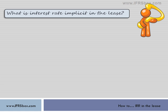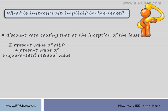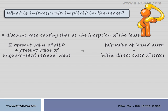First of all, what is interest rate implicit in the lease? There are a few definitions. For example, IAS 17 defines it as a discount rate that at the inception of the lease causes the aggregate present value of minimum lease payments and unguaranteed residual value to be equal to the fair value of the lease asset and any initial direct cost of the lessor. Let me clarify that a bit.